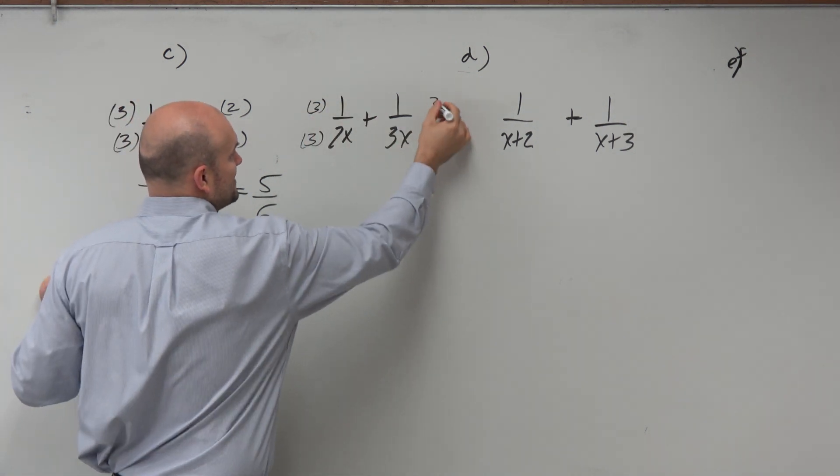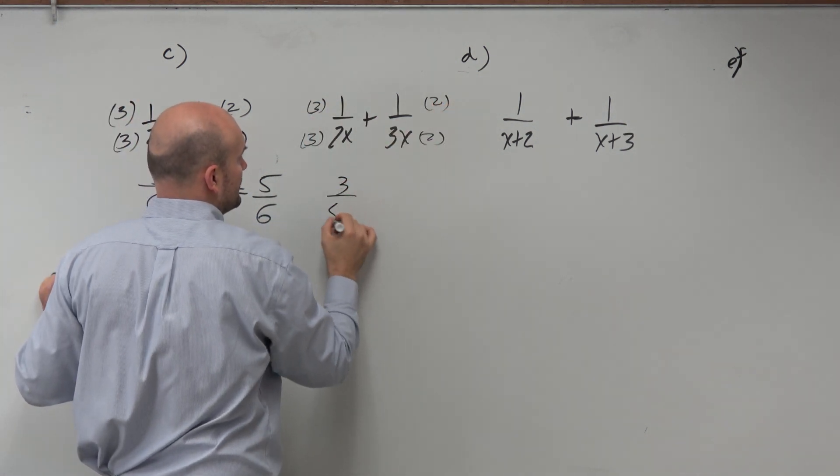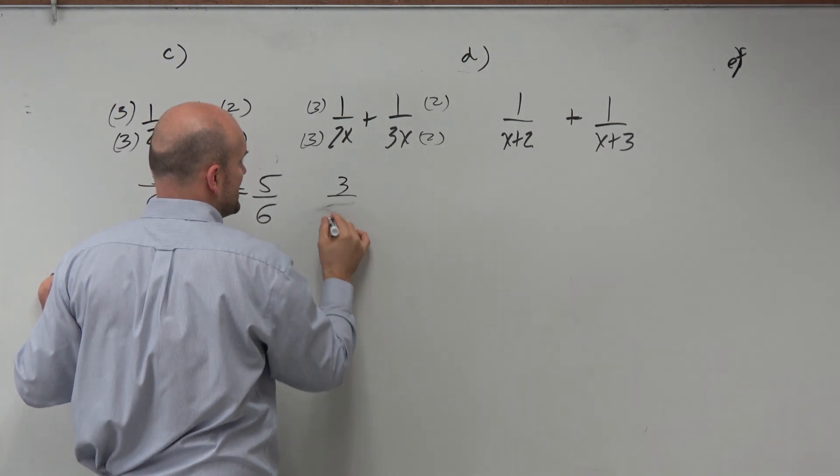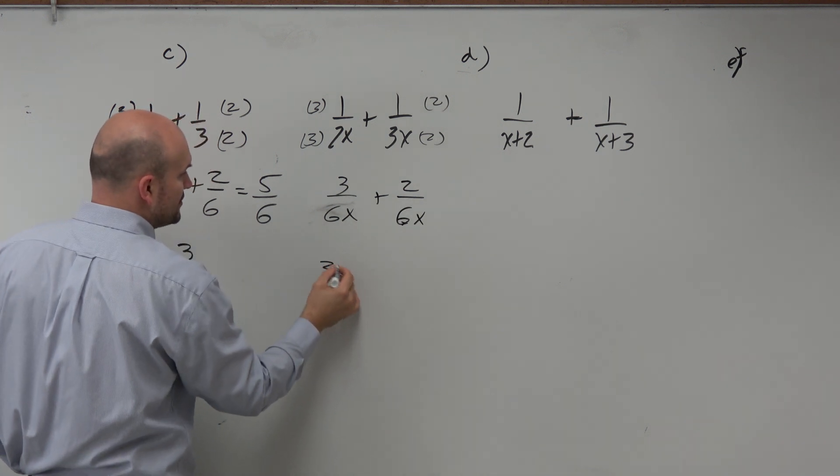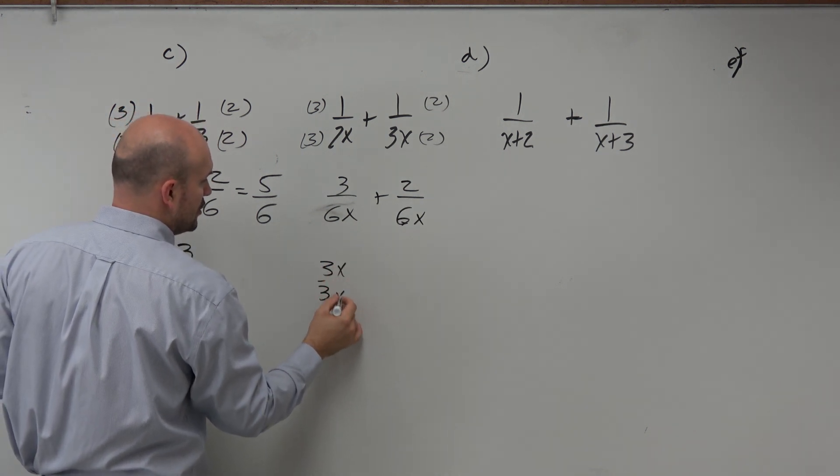So again, you just do the exact same thing here. 3 over 6x plus 2 over 6x. Now, let's say you did do 3x over 3x.